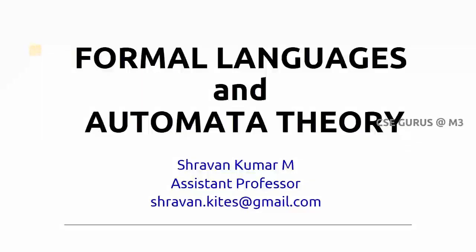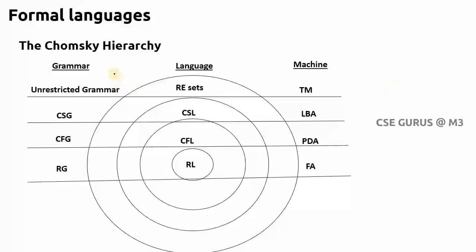Welcome to the class of Formal Language and Automata Theory. In the previous lectures we have seen the concepts of finite automata — one of the machines in the Chomsky hierarchy — what finite automata is, the types of finite automata, minimizations, conversions, epsilon-NFA, and equivalence. Finite automata is a very less powerful machine compared to the remaining machines.